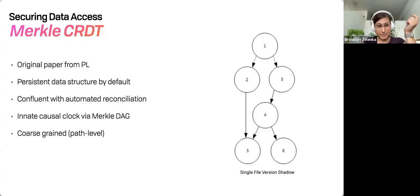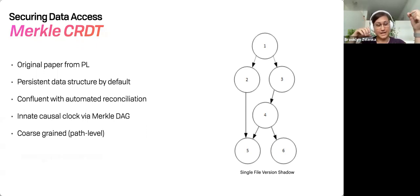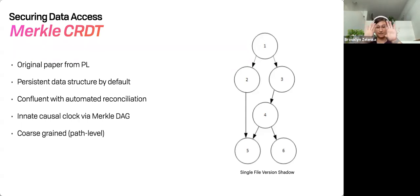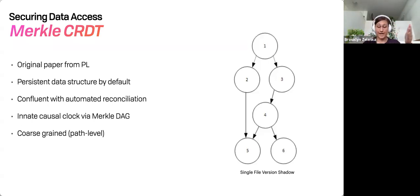Also worth noting: this is a Merkle CRDT — work done at Protocol Labs — because it's persistent and immutable. Every leaf ends up forming what we call the shadow of it. This is the number of revisions back; one here would be the latest version. It's a CRDT because we can apply them in any order and we'll get a consistent view of the data. We make progress through branching because this is happening totally concurrently and asynchronously in a merge model — but it's still consistent with all of the read and write access on each branch. Whoever's doing the merging needs to have write access to that merge, and they're going to make progress on that portion of the tree.